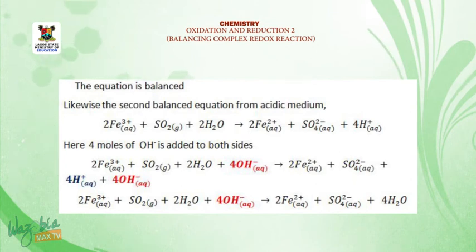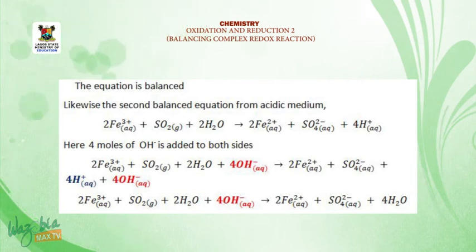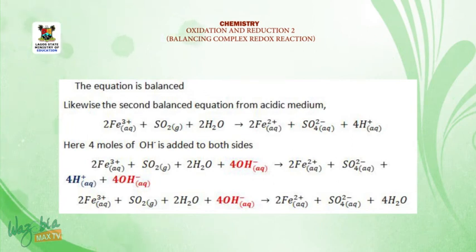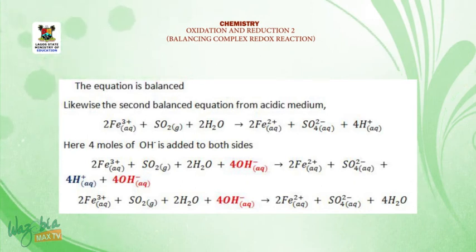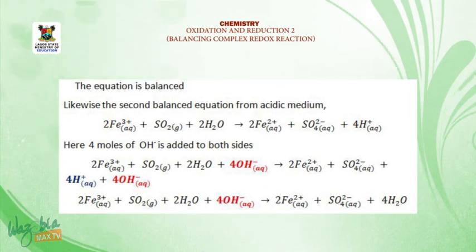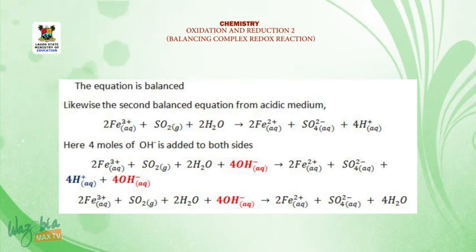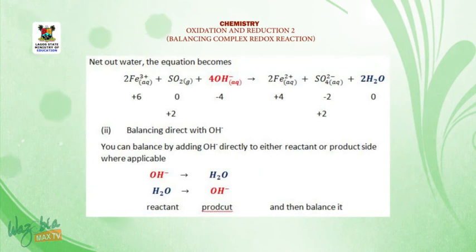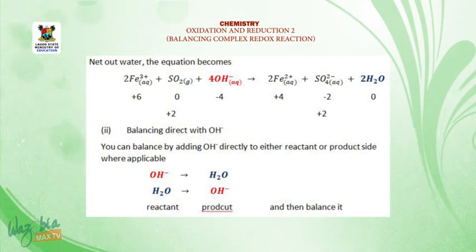Likewise for the second balanced equation from acidic medium — 2Fe³⁺ + SO₂ + 2H₂O → 2Fe²⁺ + SO₄²⁻ + 4H⁺ — we add 4 moles of OH⁻ to both sides. The 4H⁺ and 4OH⁻ combine to form 4H₂O. Netting out the water, the balanced equation in alkaline medium becomes: 2Fe³⁺ + SO₂ + 4OH⁻ → 2Fe²⁺ + SO₄²⁻ + 2H₂O.